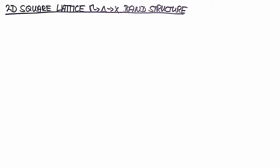Hello again. This is a very good example of how to use group theory in solid-state physics. We're going to analyze the band structure of a 2D square lattice in the delta direction, and we want to look at what happens when we apply a potential.